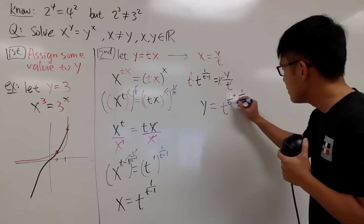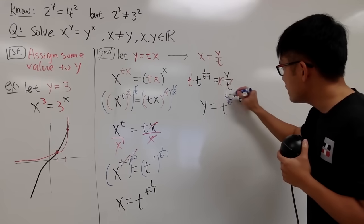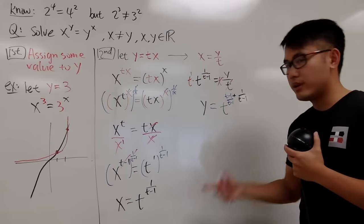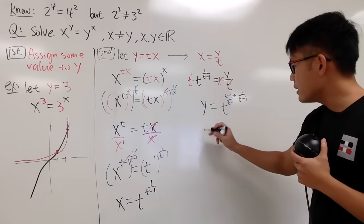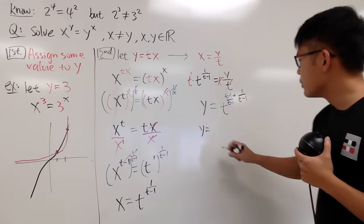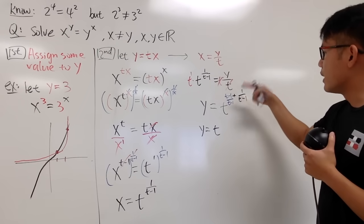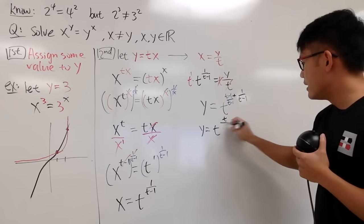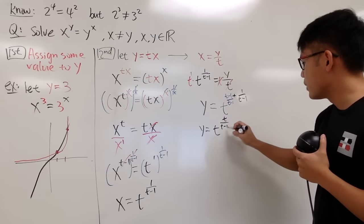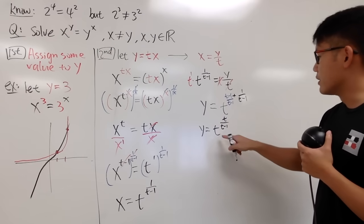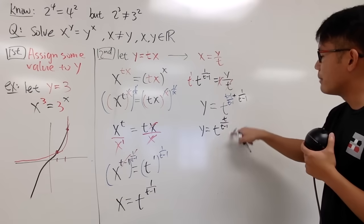And this is pretty good. But if you would like, you can get some common denominator. So this is like t minus 1, and on the top it's like t minus 1 as well. And you can just add the fractions on your own. So finally, you see that y is equal to t for the base. t minus 1 plus 1 is just t, and then you still have the t minus 1 right here. So it's t raised to the t over t minus 1 power.